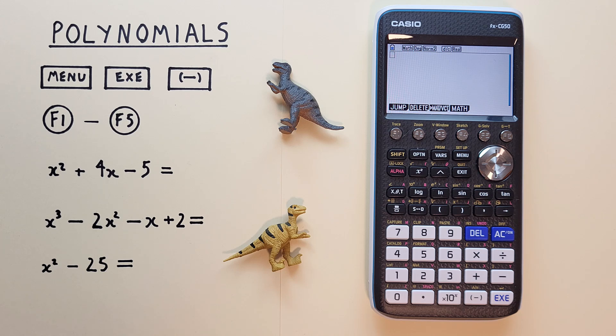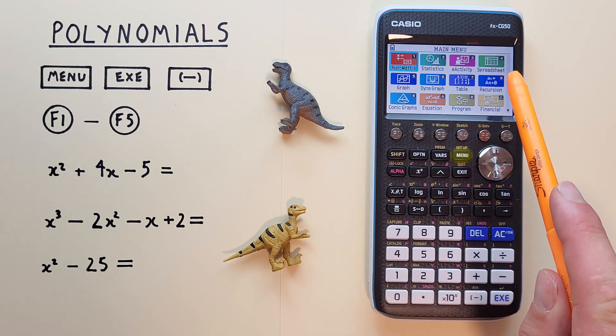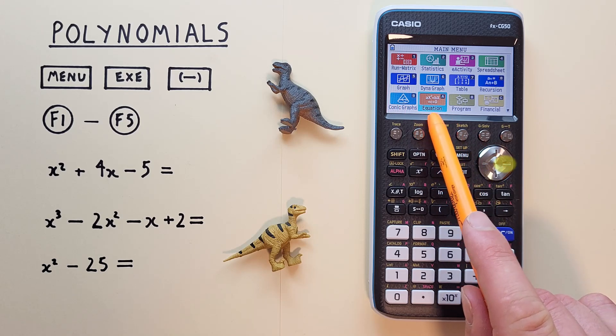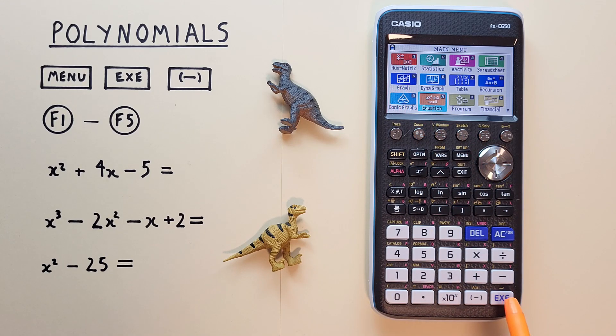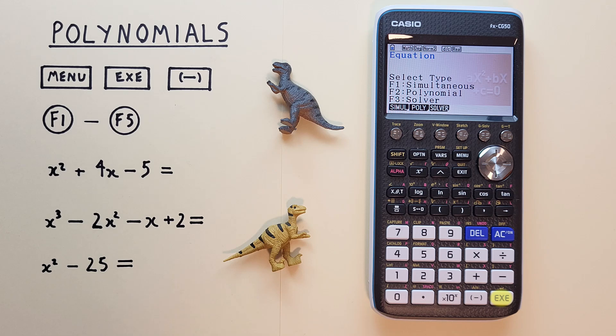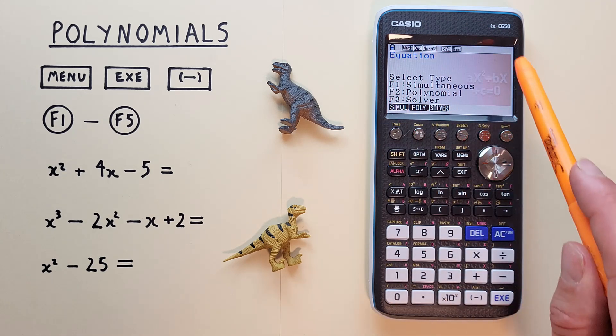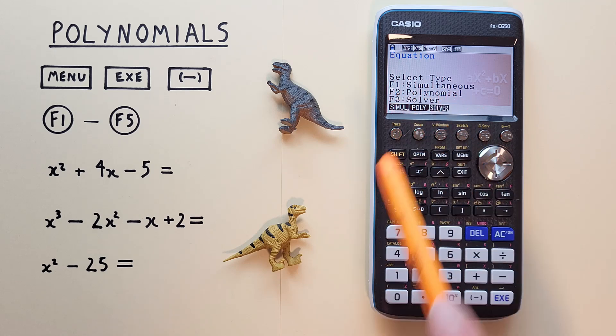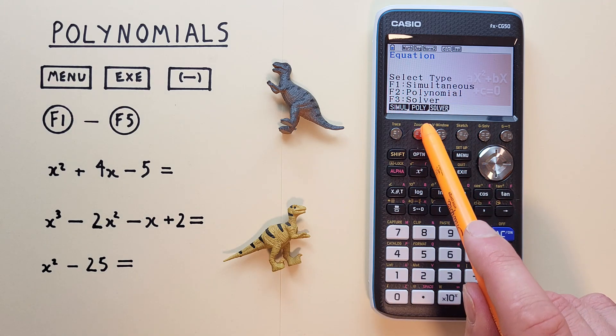If we want to solve a quadratic or other polynomial on this calculator, first we have to navigate to the polynomial function. To do that, we hit the menu key to go to the main menu and then scroll down and over to the equations option there. Select it with the exe key so that we see the equation menu here. And we see f2 polynomial. So we hit f2 to select that.